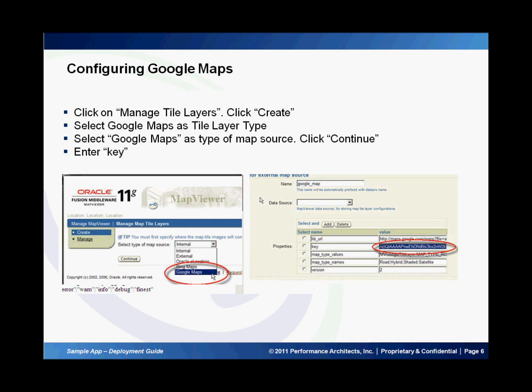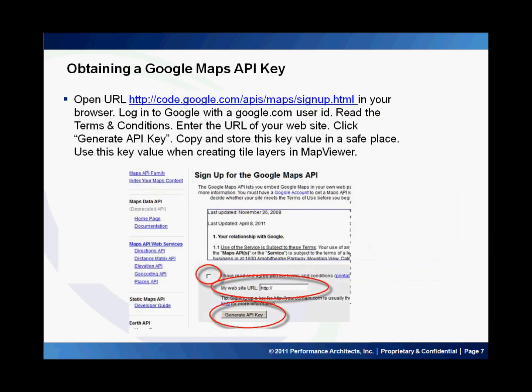Now, in 11g R2 of the map viewer version, you can use Google Maps as a source for base maps. In the map viewer console, click on Manage Tile Layers and then Create. Select Google Maps as the tile layer type, then select Google Maps as the type of map source and click Continue. There, enter the key. To obtain the key, you can go to the URL shown in this slide and enter your website to get the key.